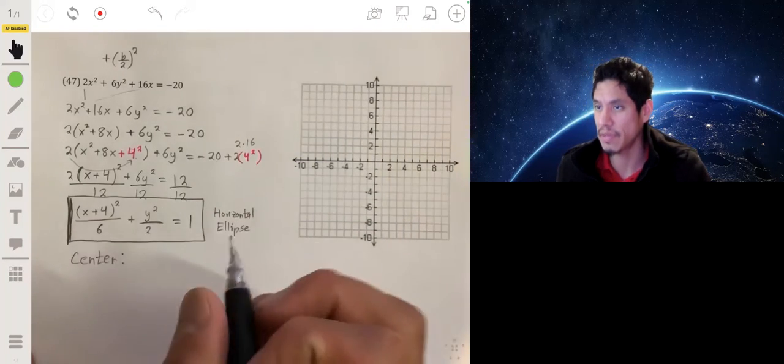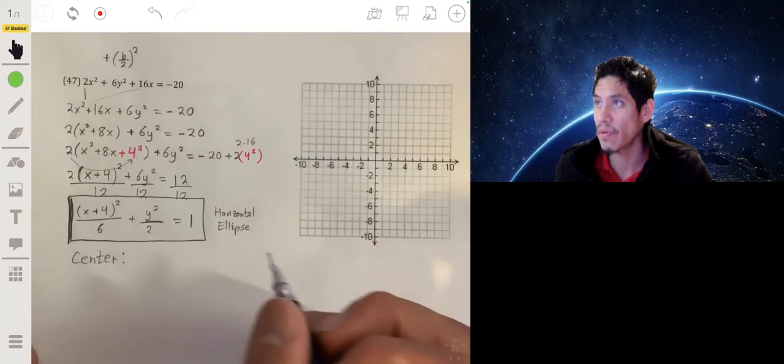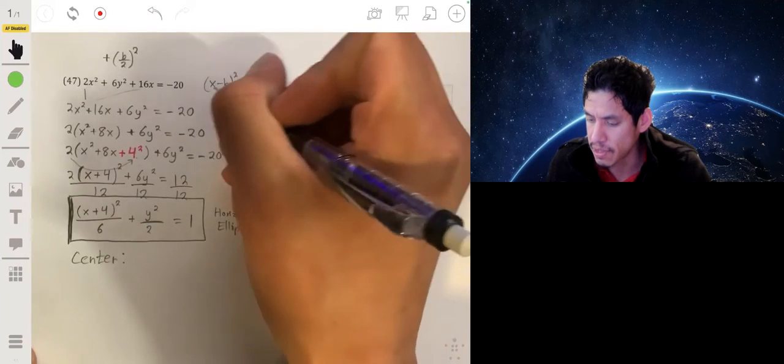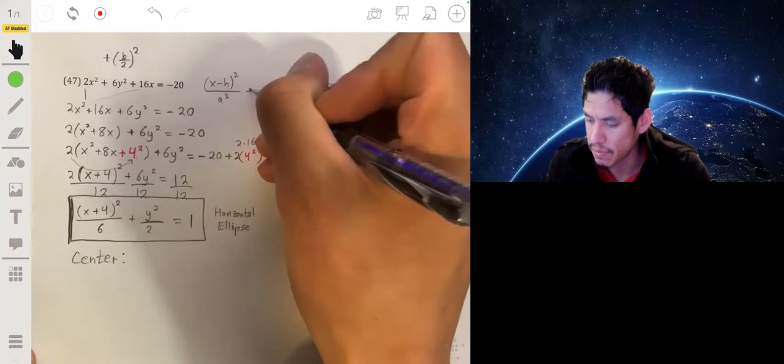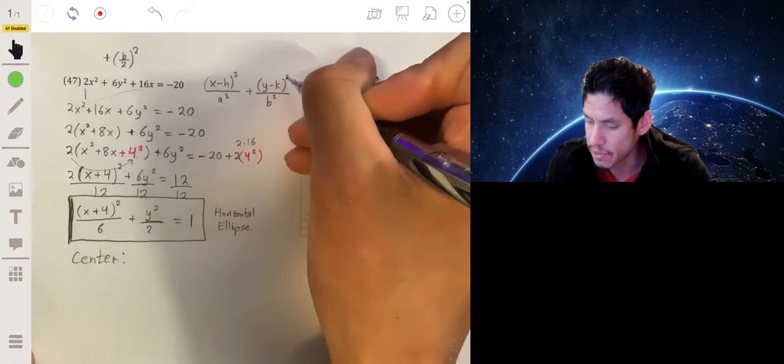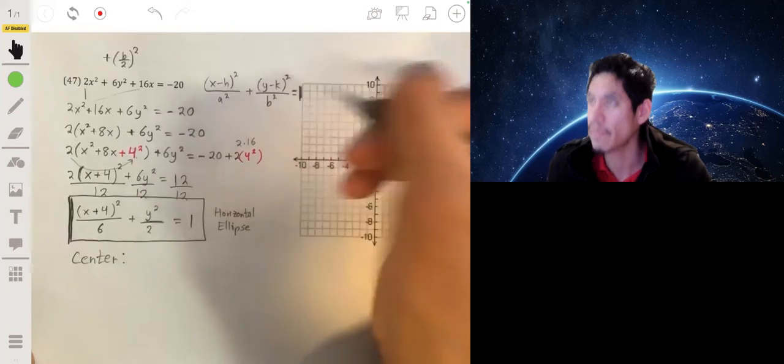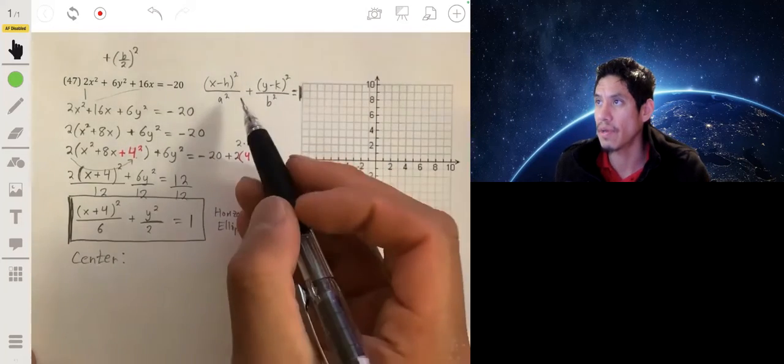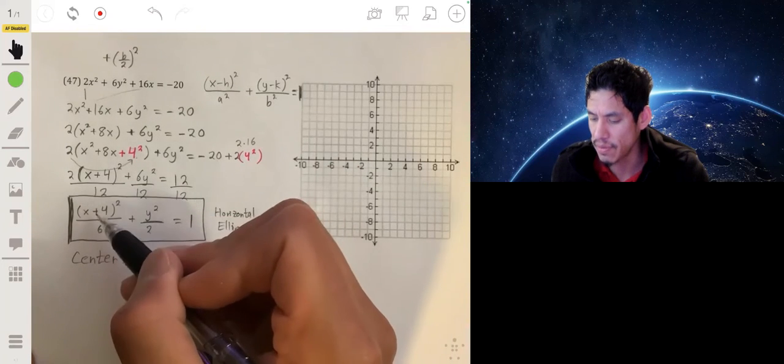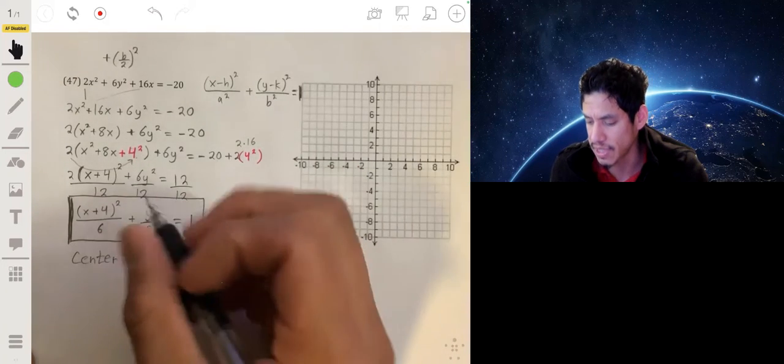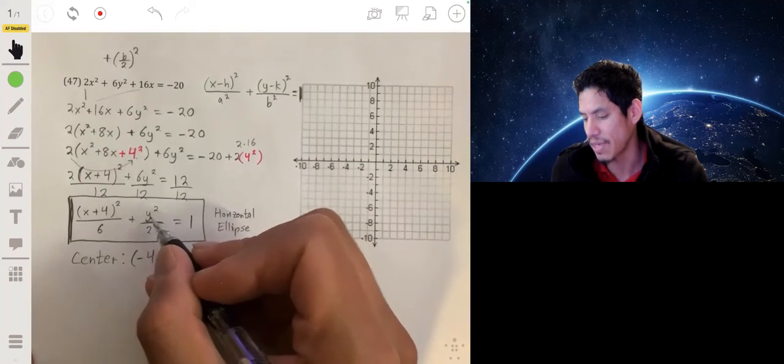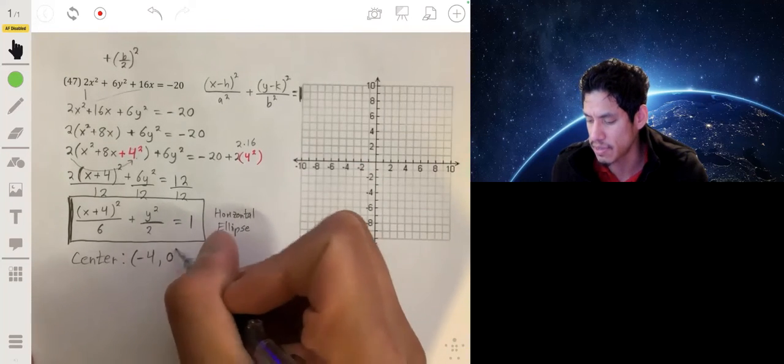Remember the center is going to be h, k. Let me just write the general form: x minus h squared over a squared plus y minus k squared over b squared equals 1. So x minus h, that means my h is negative 4. And then y squared is y minus 0 squared, so my k is 0. So the center is going to be negative 4, 0.